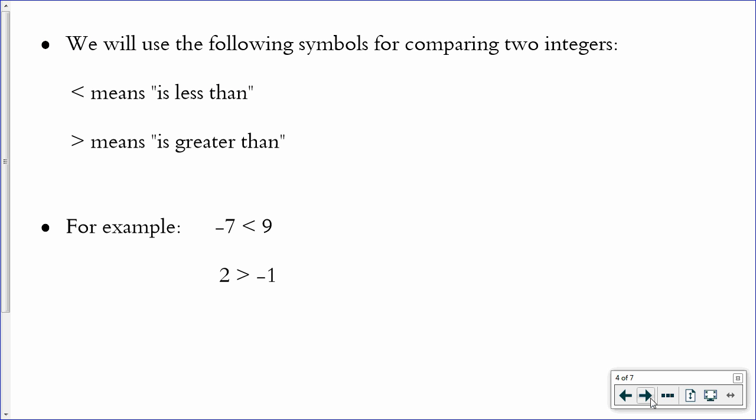We're going to use the following symbols for comparing two integers. That first symbol means is less than. If you hold your hand up, your thumb and pointer finger, and to create that little v shape, right, if it forms the letter L, it's a less than symbol. If it faces the other direction, that's going to be a greater than symbol. So, for example, negative 7 is less than 9. That's how you would read that.